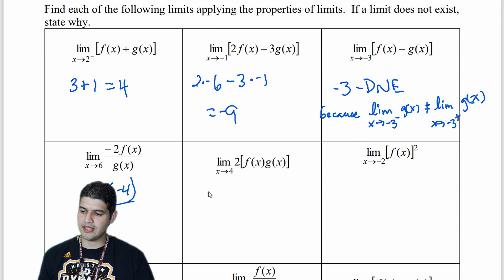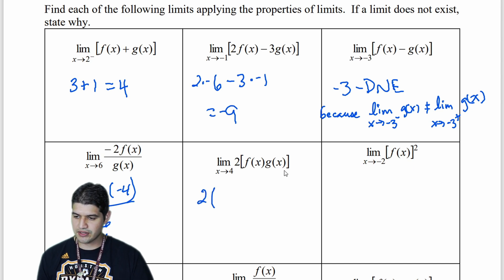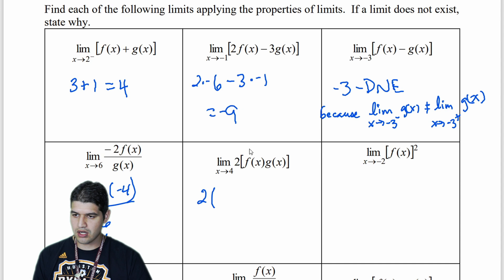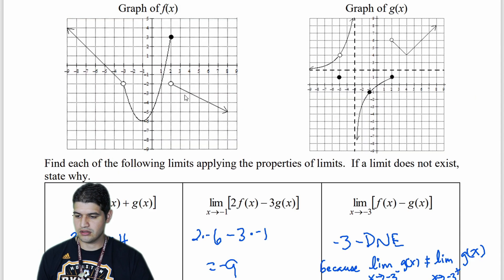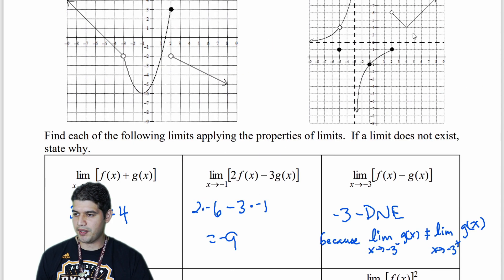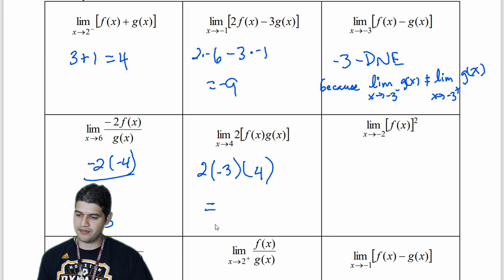Looking at the limit as x approaches 4 of 2 times f of x times g of x: f of x at 4 is negative 3, and g of x at 4 is positive 4. Multiplying: negative 3 times 4 is negative 12, then times 2 gives us negative 24.